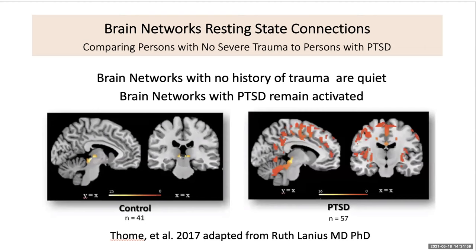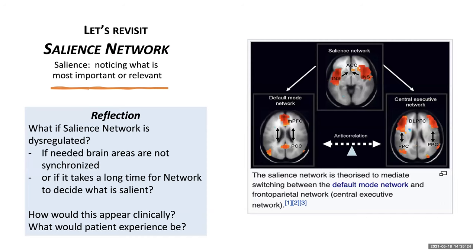Therefore, the person with PTSD is not able to rest, is not able to assess and reflect on their own emotional health, or on the emotional and social activities of others. So let's think again about the salience network: if the salience network is dysregulated, if needed brain areas are not synchronized, or if it takes a long time for the network to decide what is salient, how would this look clinically and what would a patient's experience be?